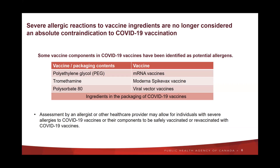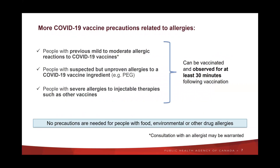Severe allergic reactions to vaccine components or the COVID-19 vaccine are no longer considered to be an absolute contraindication to vaccination. Assessment by an allergist or other healthcare provider may allow for these individuals to be safely vaccinated or revaccinated with the same vaccine product. For more information on revaccination after anaphylaxis, please see our webinar on the topic hosted on the canvax.ca website. Some vaccine reactions can mimic allergies, such as vasovagal syncope. These types of reactions are not contraindications to future vaccination.